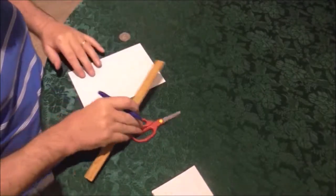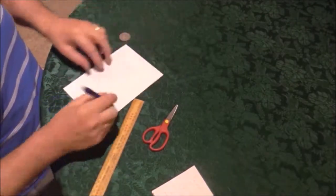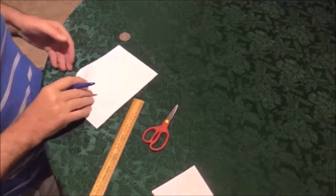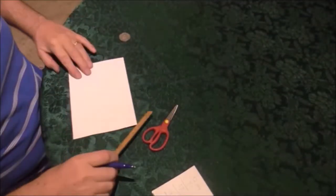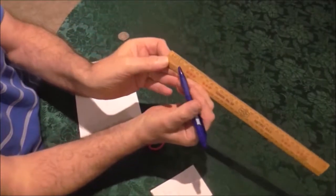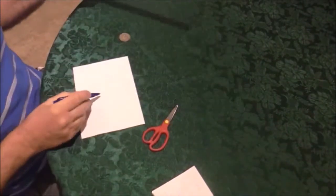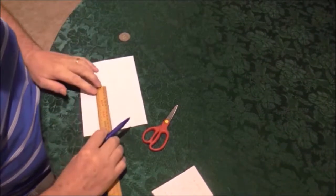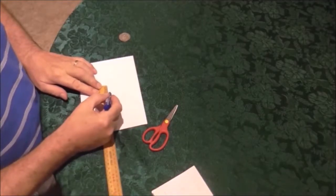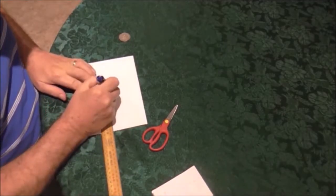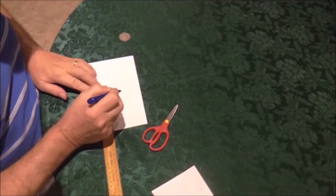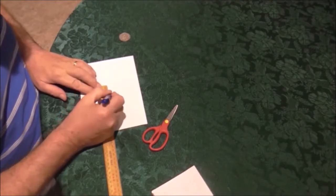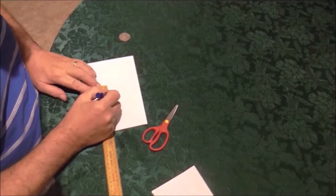Now on the paper, round about the centre, it doesn't have to be exactly the centre, but somewhere in the middle you put a cross and that's your centre point. So you get the centre point on the ruler which is 13.5 and the centre point of the paper which is the cross. You line those two up and you make a bit of a dot at the zero and a dot at the 27.